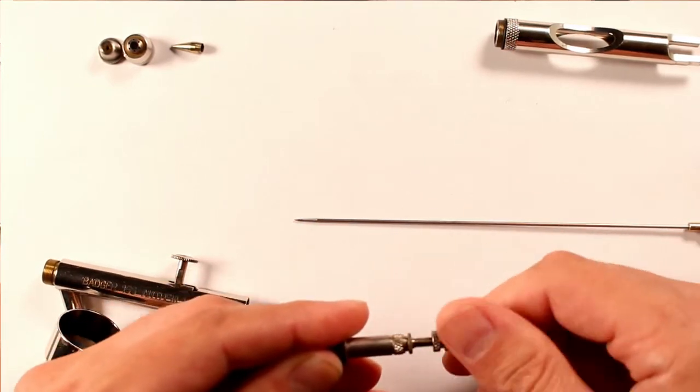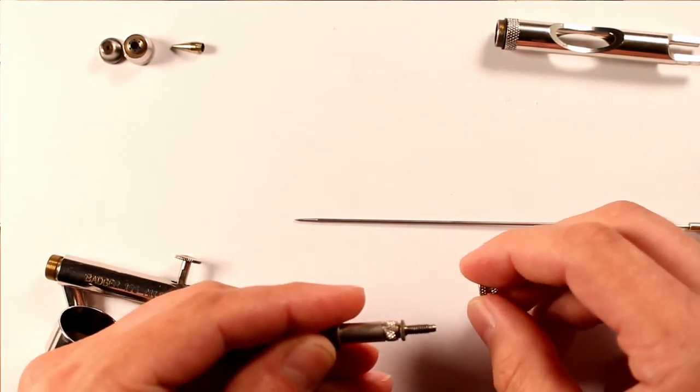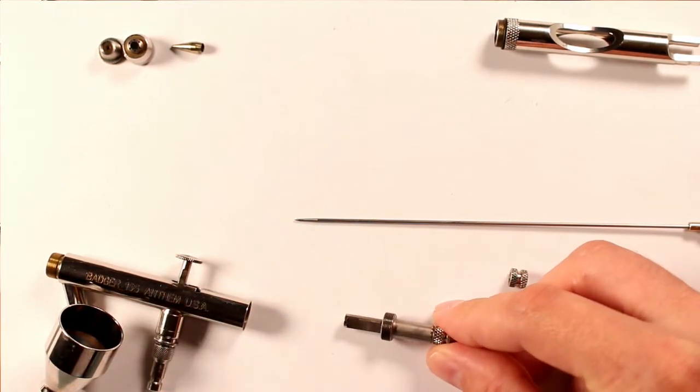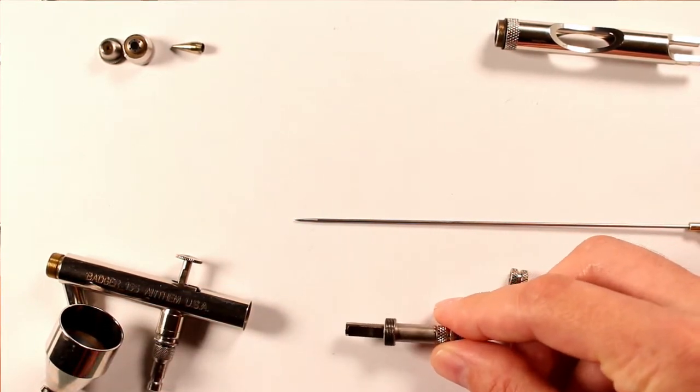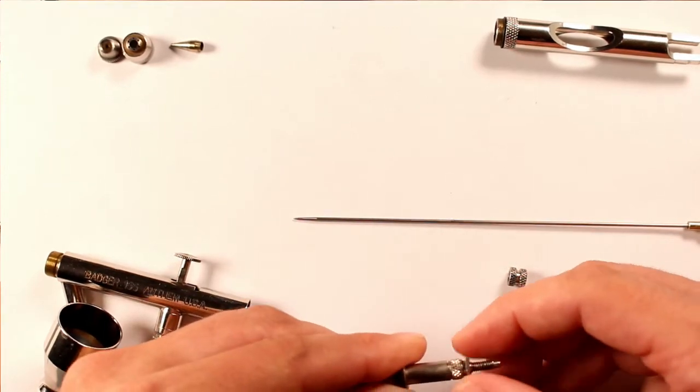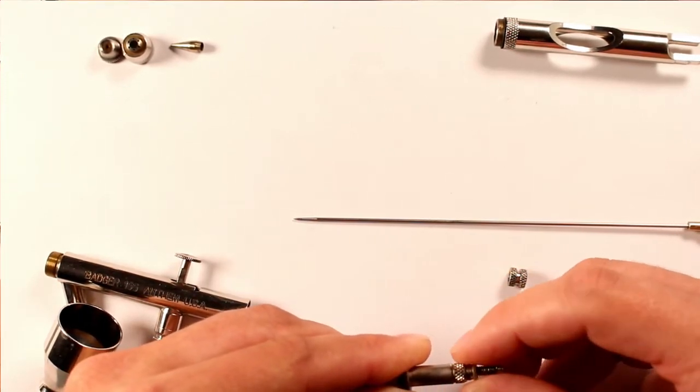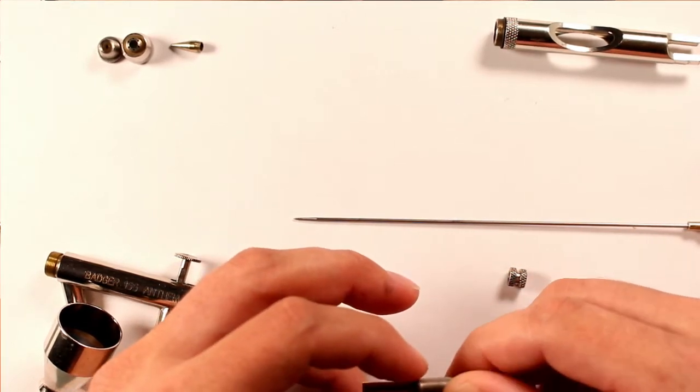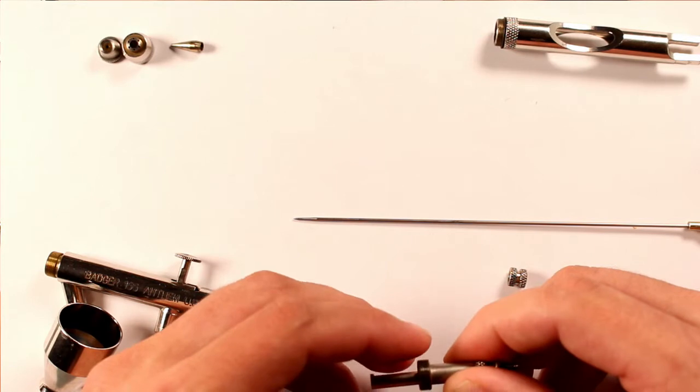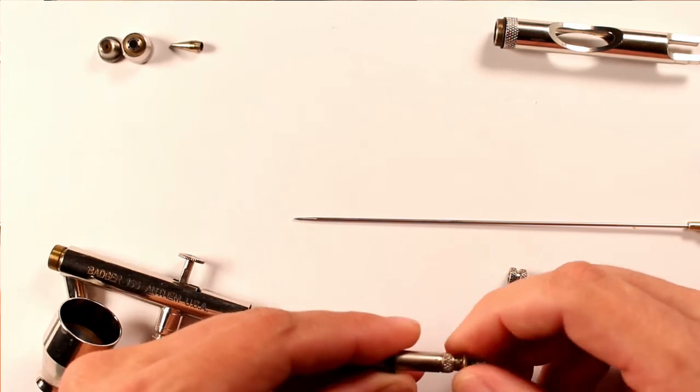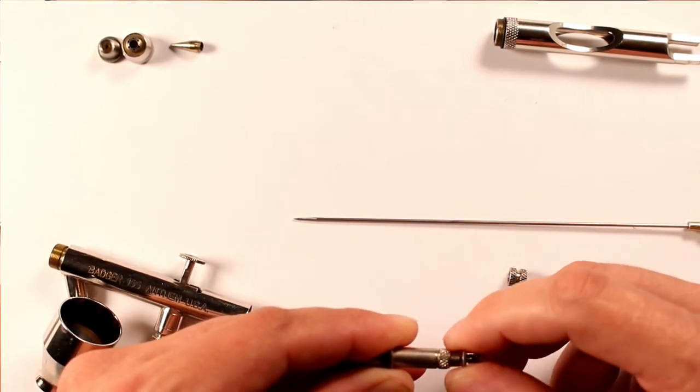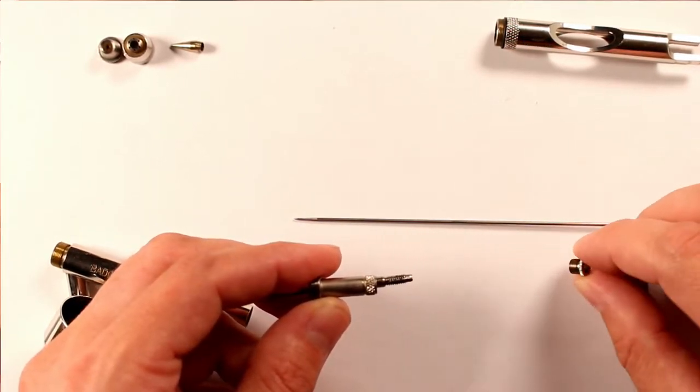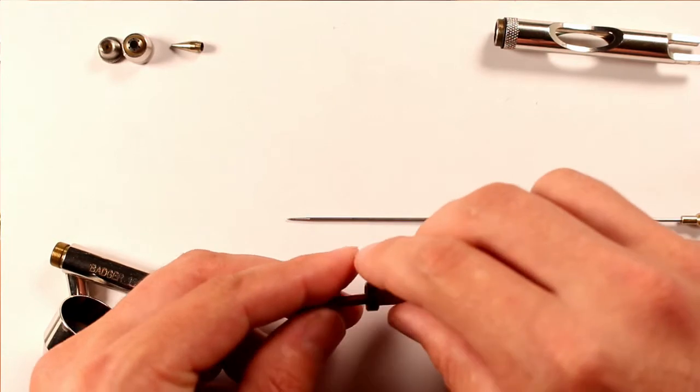All right, then we're going to continue with this and take off the spring screw, which is right here. This actually controls the tension of the return trigger on your airbrush. You don't really want to set the tension from this part by not screwing it all the way. You want to set it right here. I'm going to put that right here.